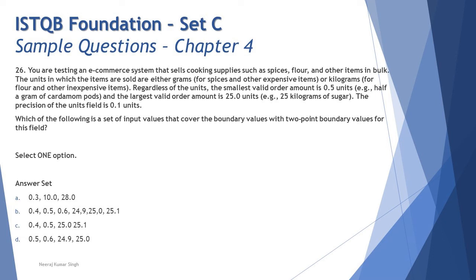Anything less than 0.5 is not valid, anything more than 25 is not valid. The question asks for all or set of input values that covers the boundary values. They didn't say valid or invalid, so you'll pick all four boundary values as per two-point analysis.